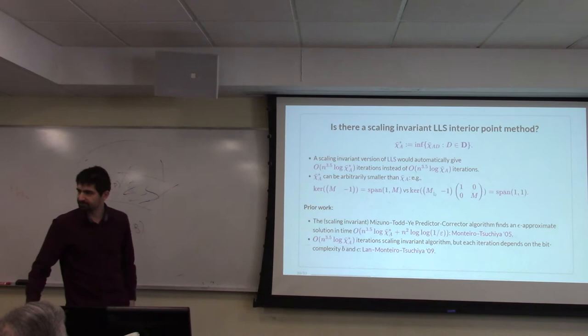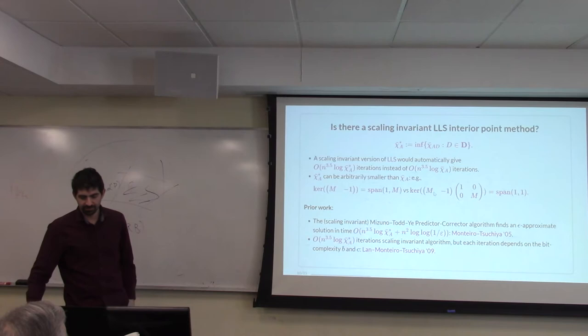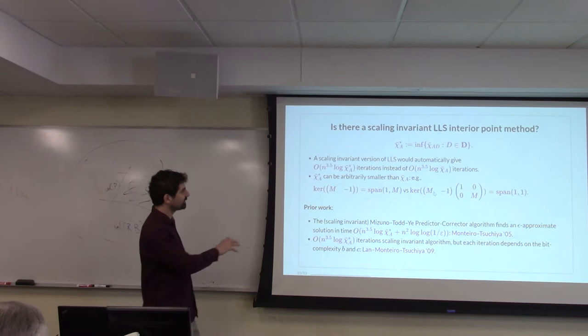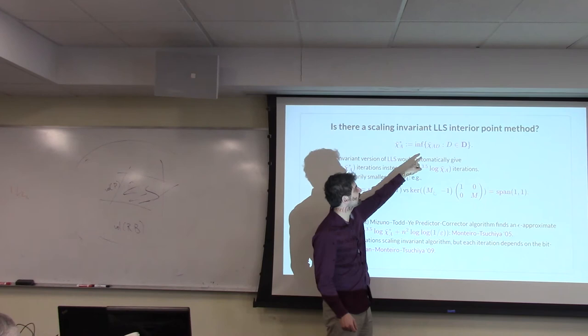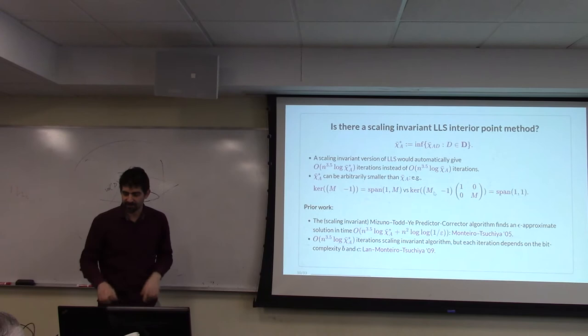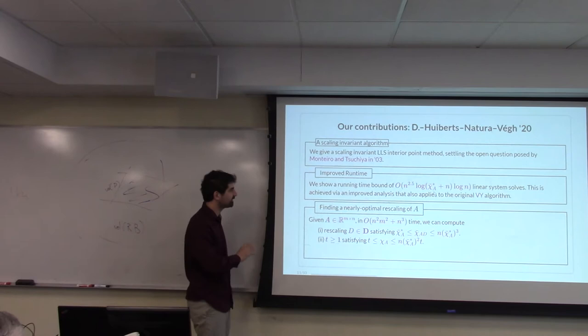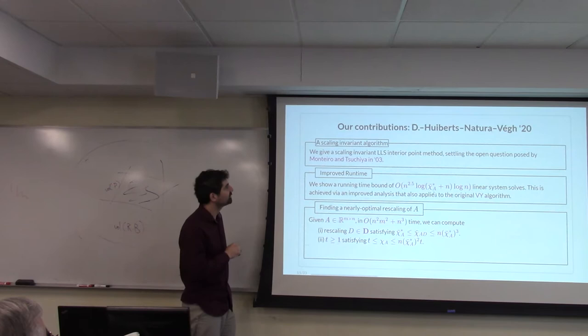A quick question: originally in the chi measure we were looking at a subset of coordinates, and now we have these additional diagonal matrices — so what is the search space? How large is the search space for these diagonal matrices? It's the whole space of diagonal matrices. We'll see an approximate version of this parameter where it becomes much clearer what you should do.